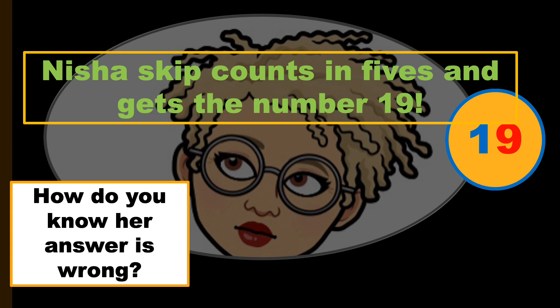Hey guys, I'm back. Do you remember what I said about the numbers that count in fives? Numbers that count in fives will always end in either zero or five — that is, have a zero or five in the ones place. We've highlighted the ones place in the number 19 in red. In the ones place there is a nine, and when skip counting in fives it should either be zero or five. So Nisha is wrong because in the ones place there is a nine, and when counting in fives there can only be a zero or a five.